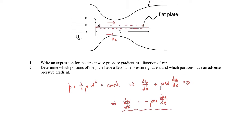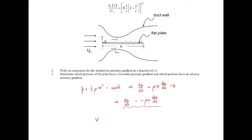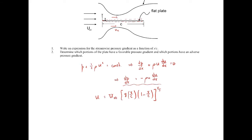To find the outer flow velocity, we use the expression given: u = u_∞ · [8(x/c)(1 − x/c)]^(1/5). To find the pressure gradient, I need to plug this in and also find du/dx. I won't go through all of the calculus — it's just a matter of using the product rule — but let me write down what you get for the velocity gradient du/dx when all is said and done.